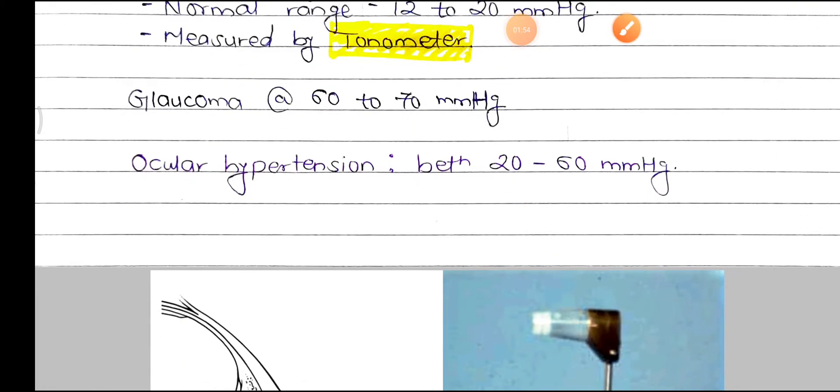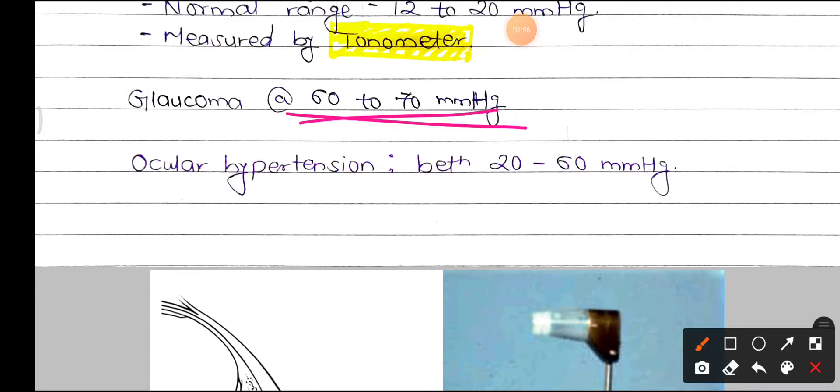If the pressure rises to 60 to 70 mm of Hg, then this condition is known as glaucoma. It is caused by very less amount of drainage or any blockage into the canal system which drains the aqueous humor.